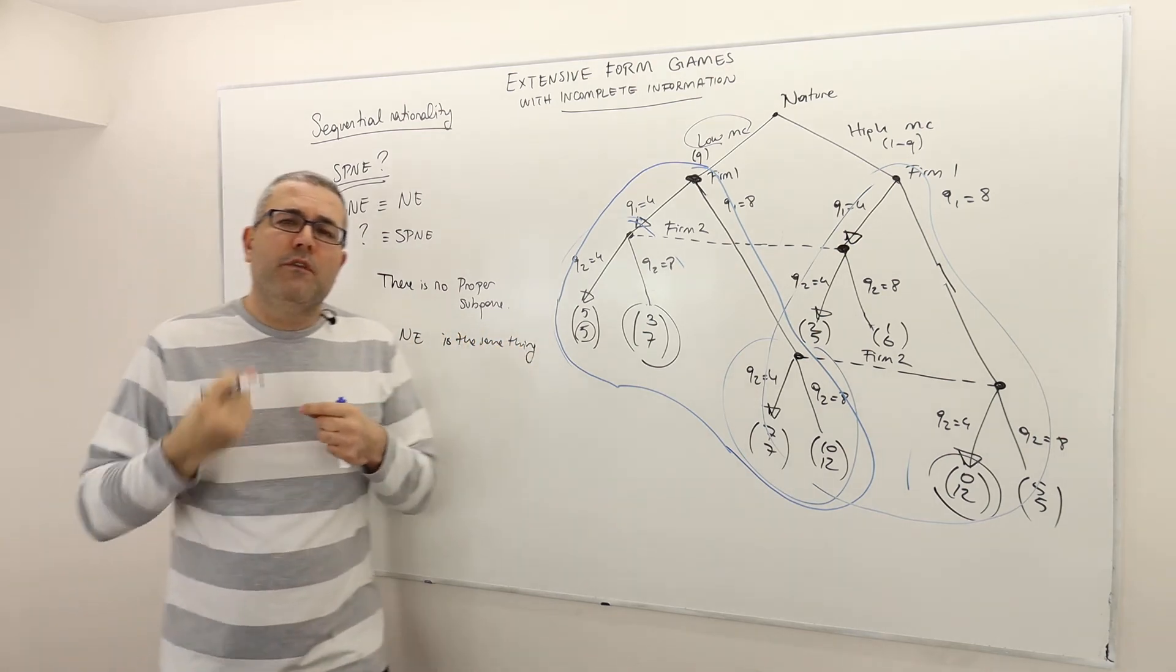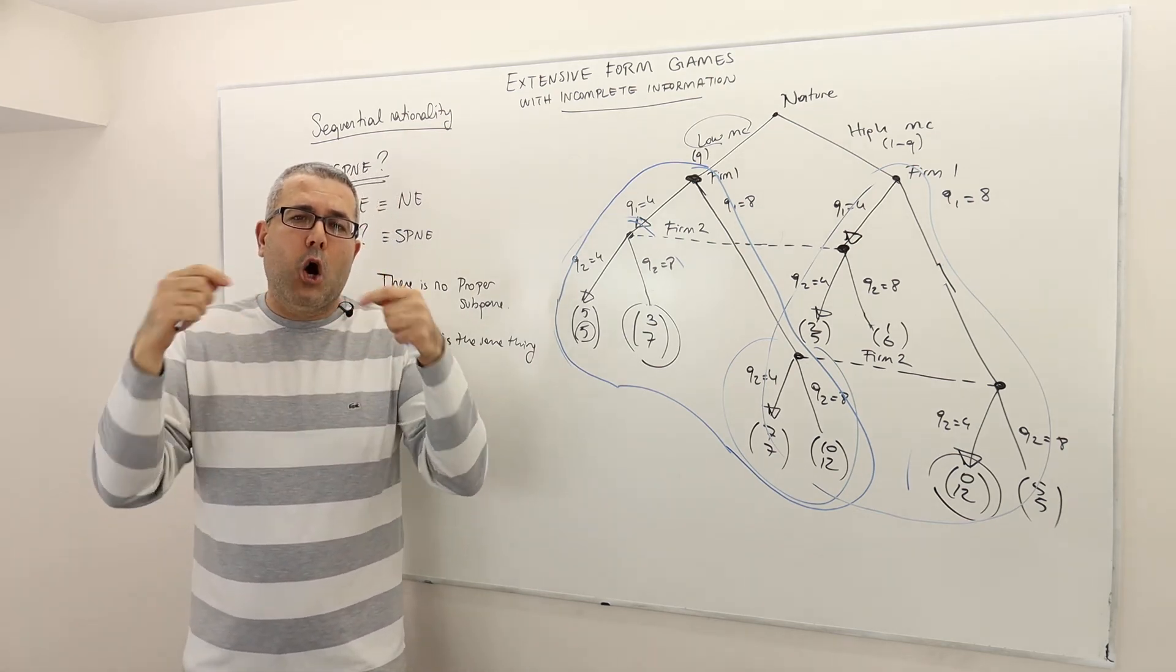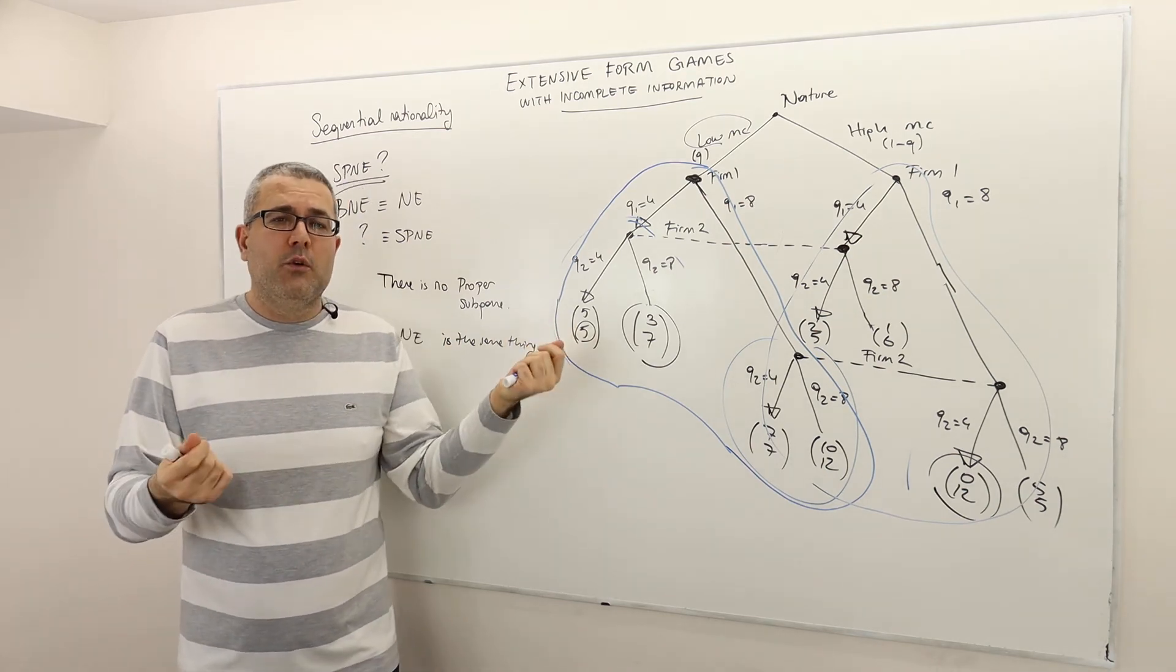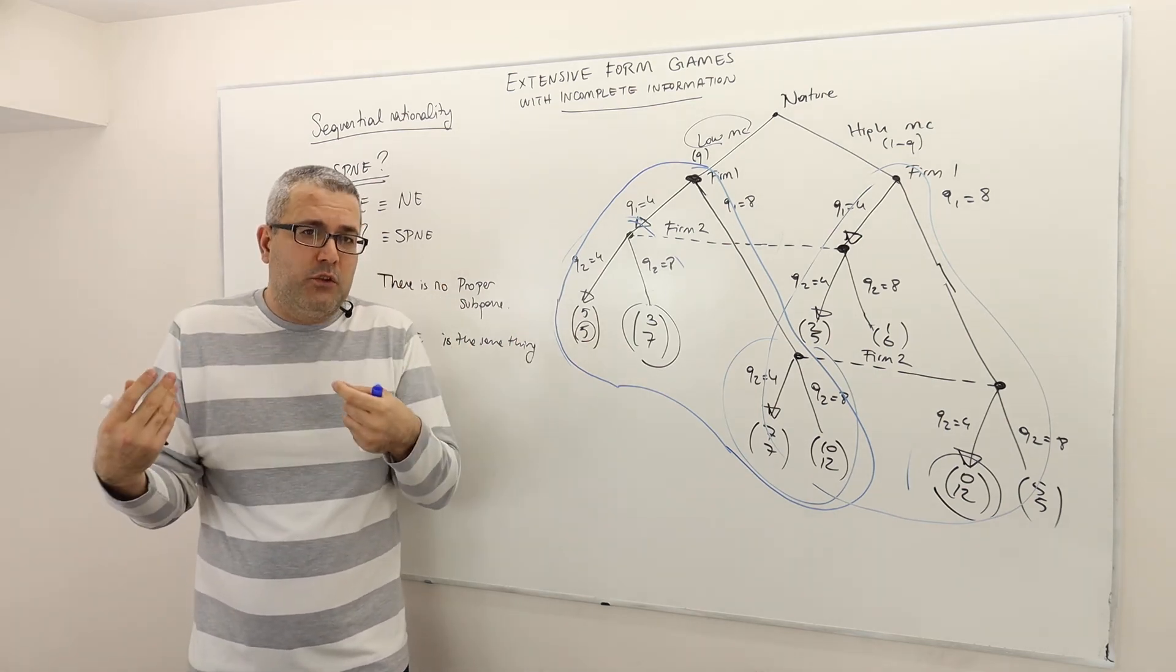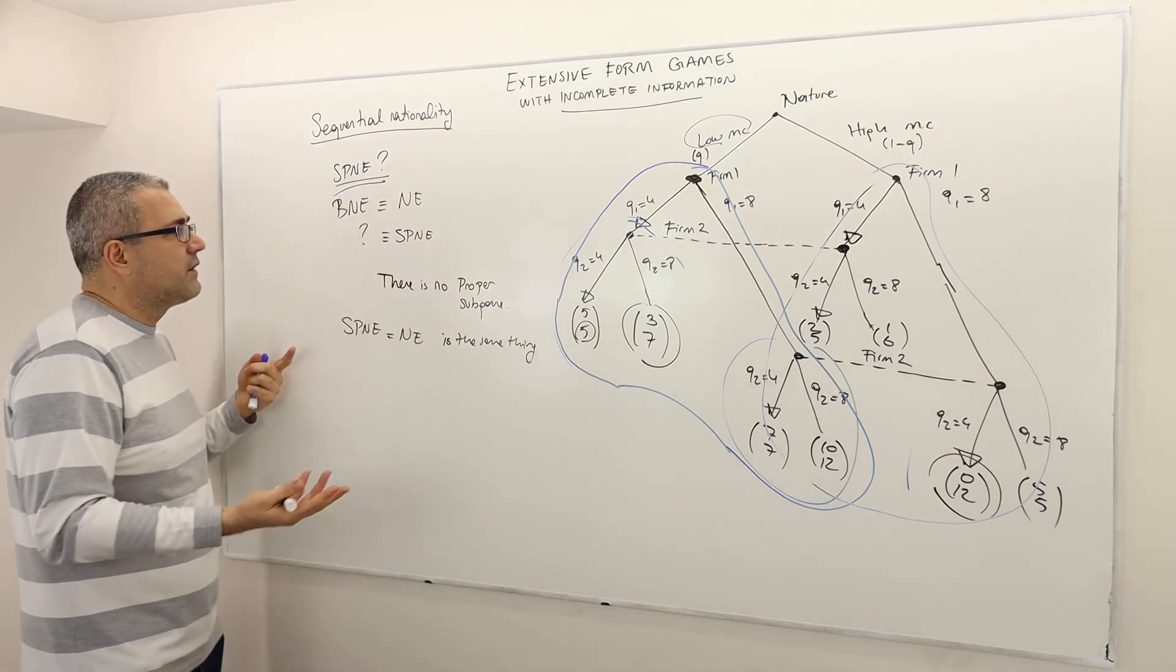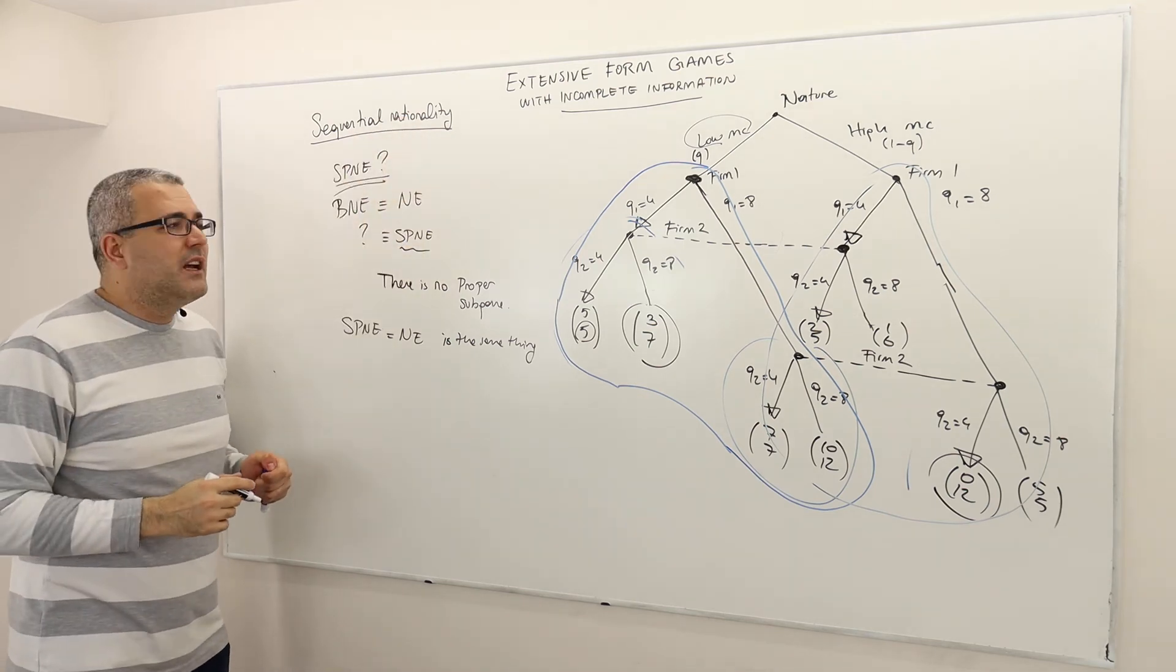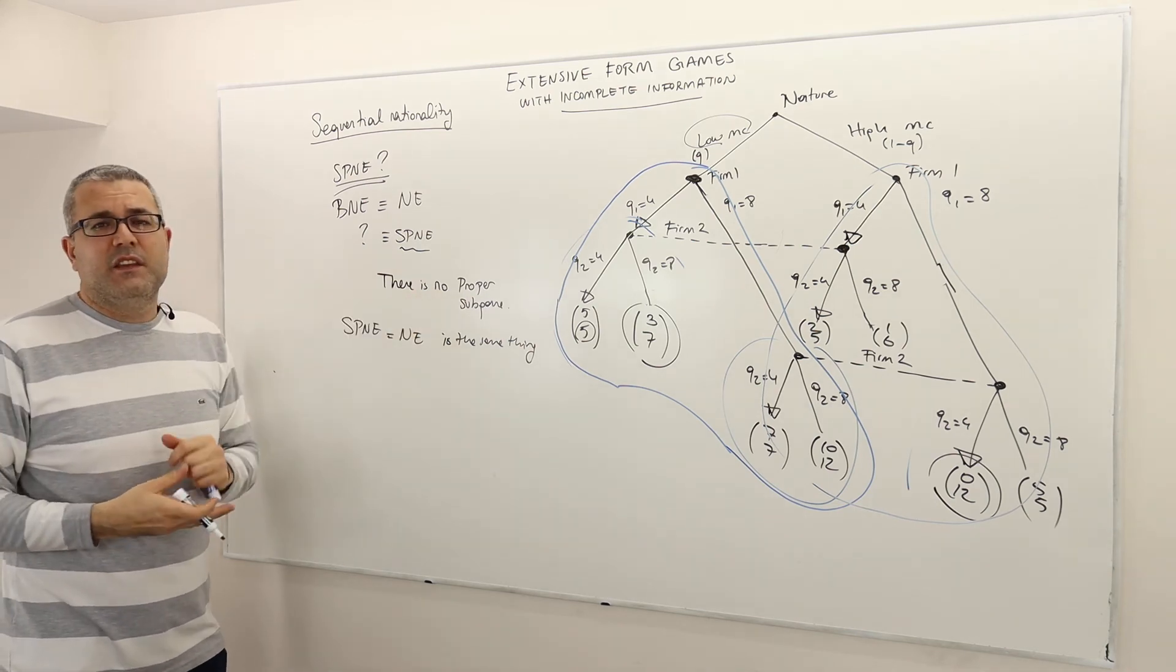Remember, the subgame perfect Nash equilibrium forces me to find the optimal Nash equilibrium strategies at every subgame. But there is no subgame other than the game itself. So that means every Nash equilibrium is also subgame perfect Nash equilibrium. So what does that mean? That means this idea of sequential rationality, I cannot even use it in these games or at least in this game.